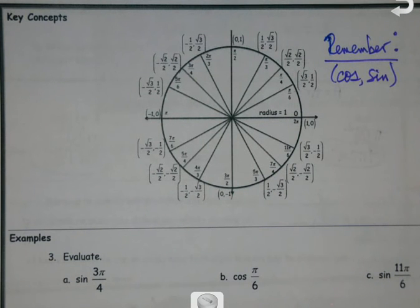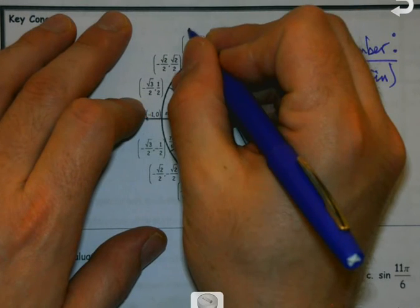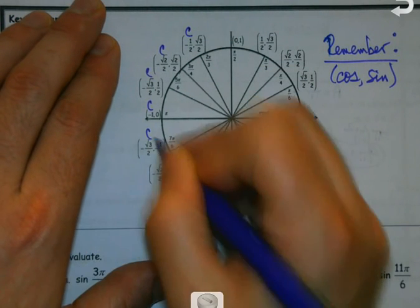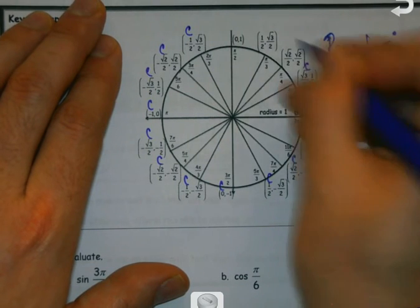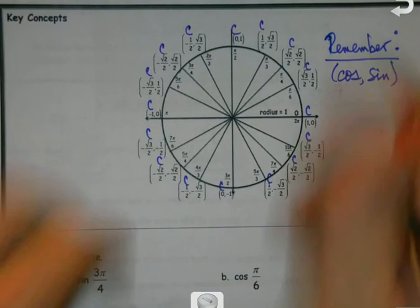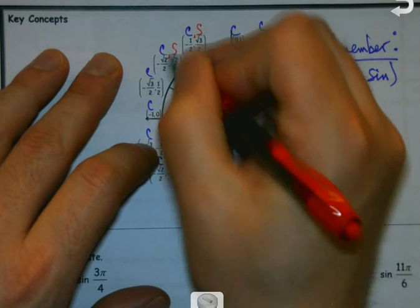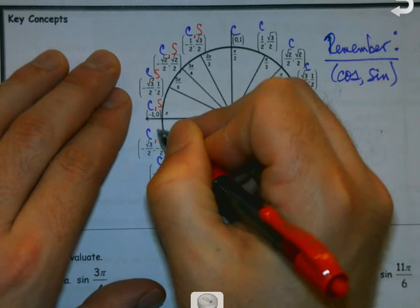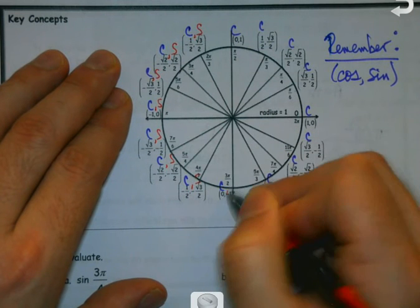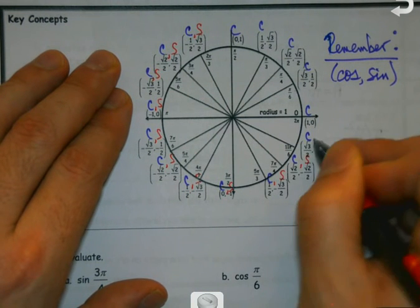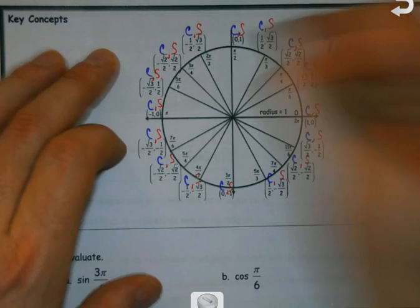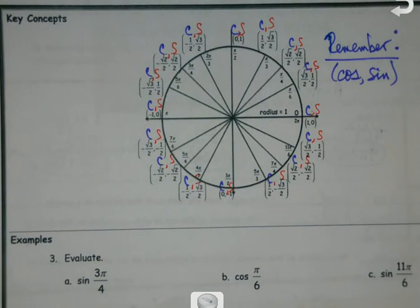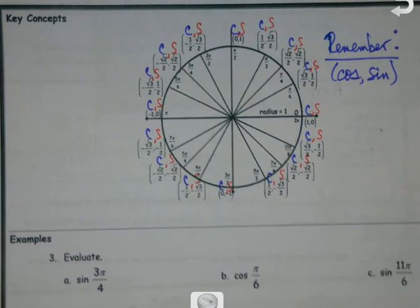So when we saw this before, we basically went around the circle and said, okay, so these are all my cosine values. And then all the values that would normally be in what we'd call our y would be the sines.